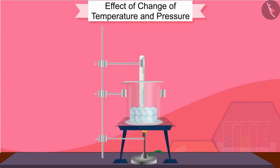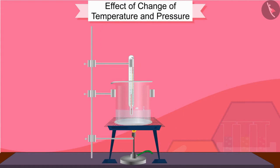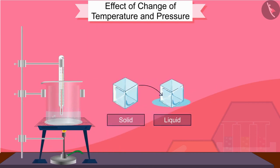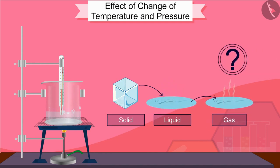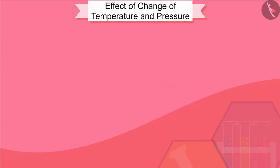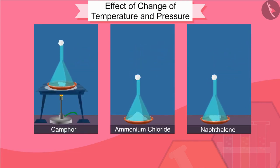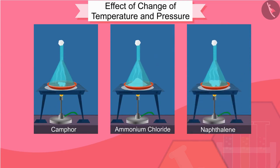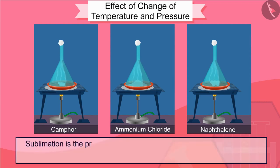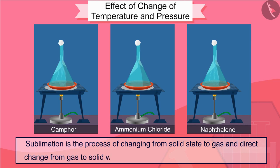By this activity, we can conclude that by changing the temperature, we can change matter from one state to another — when heated, matter goes from solid to liquid and liquid to gas. There are some substances such as camphor, ammonium chloride, and naphthalene that convert directly from the solid state to gas and back to solid without being converted into a liquid state. Sublimation is the process of changing from solid state to gas, and the direct change from gas to solid without changing into liquid is called deposition.